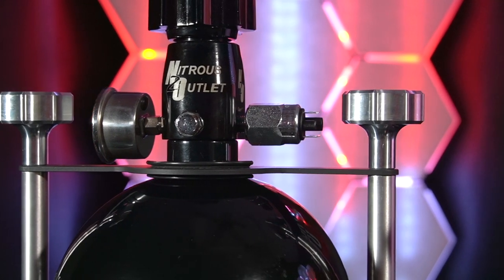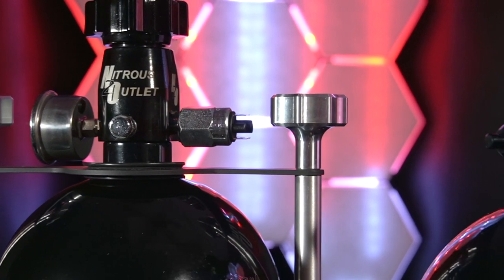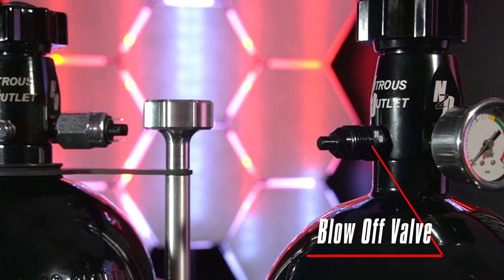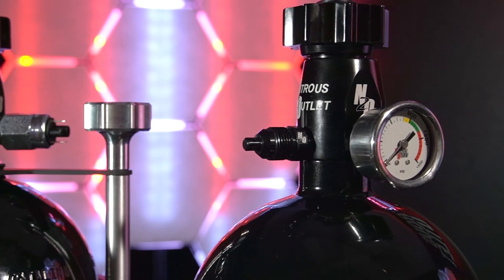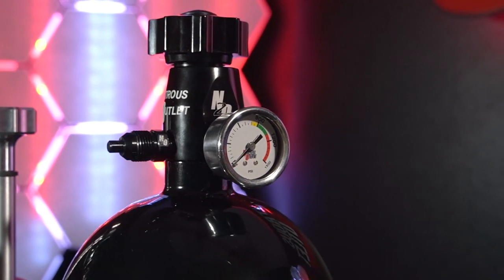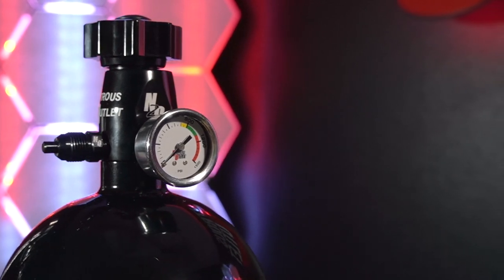NHRA regulations require that nitrous bottles mounted inside the driver's cabin must be outfitted with a blow-off valve and evacuation line. This will vent the nitrous oxide outside the driver's cabin in the event the burst disc were to rupture due to overpressure.